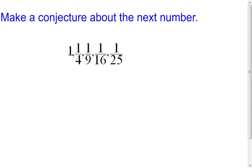See if you can make a conjecture on this next one — push pause and see if you can figure out what the next number is in this sequence. Looking at this, I have a bunch of fractions except the very first one, so I'm going to turn that first one into one over one so it follows the same pattern. My conjecture is that the next number will have a one in the numerator, since every other one does. Then I look at the denominators: they go up by three, then five, then seven, then nine.